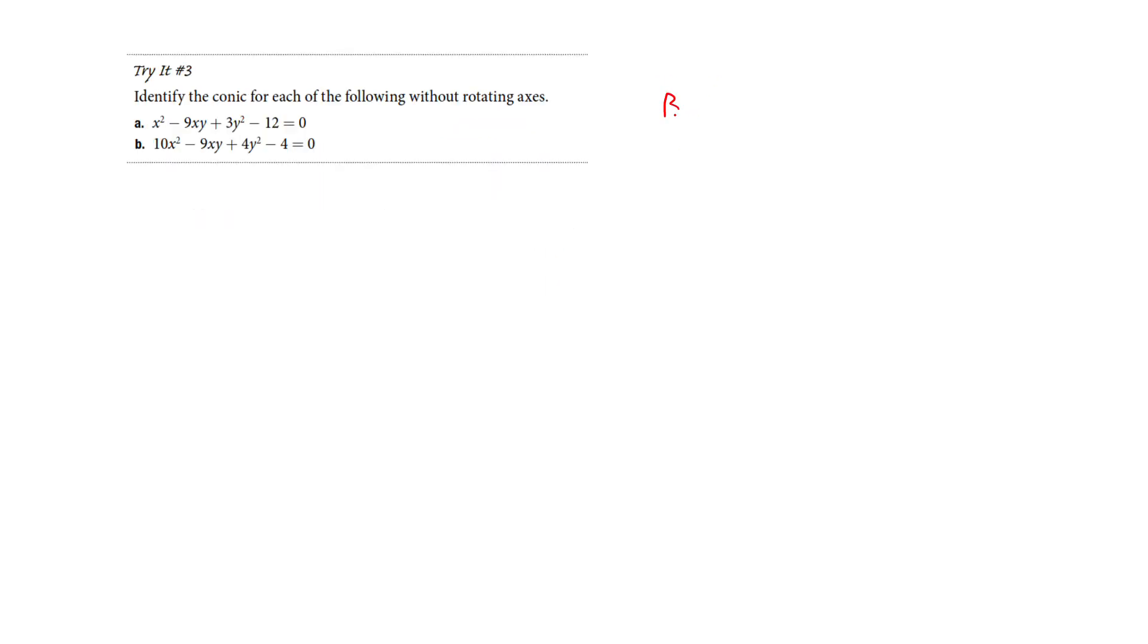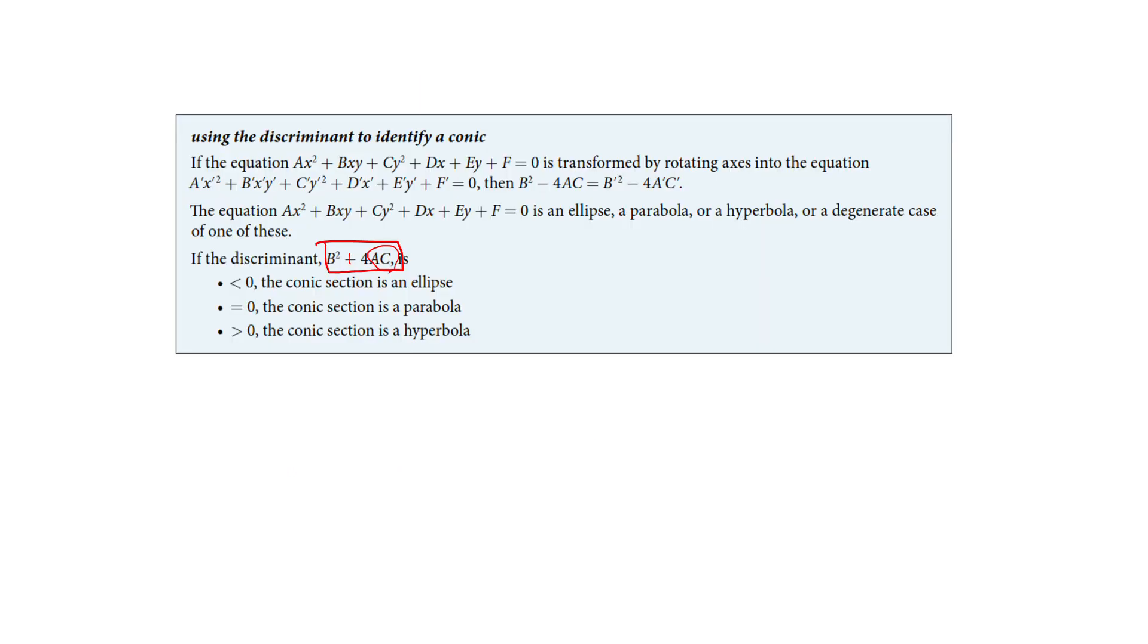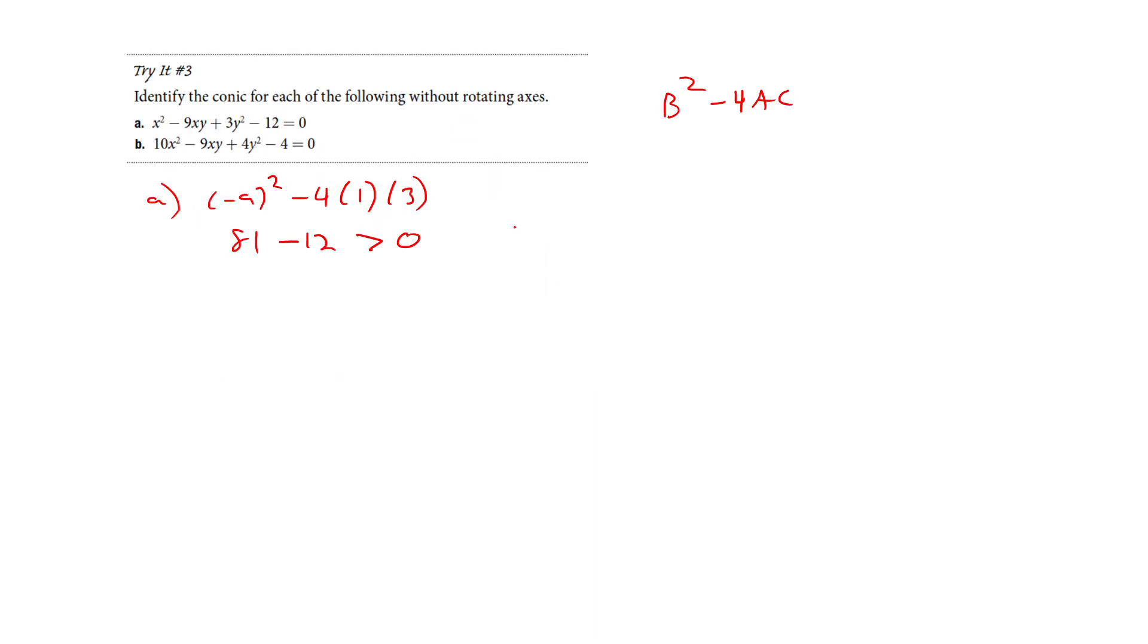Okay. Let's try one more here. We've got b squared minus 4ac. So we're going to calculate this first one. b squared is going to be negative 9 squared minus 4ac. So I've got 81 minus 12. Now this is going to be greater than zero. And so that was, let me see here. I can't remember them all. Greater than zero is going to get us a hyperbola. So this first one is going to be a hyperbola.